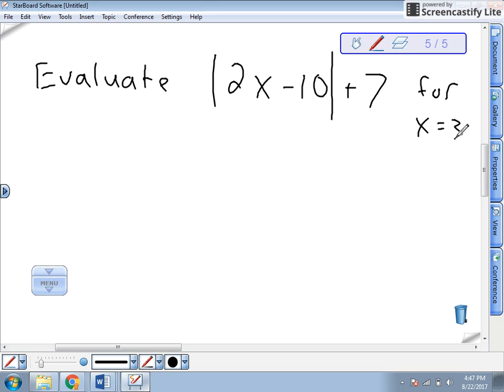So that means where I see an x, I'm going to substitute that in. So here we go. This is going to go right here. So when I rewrite this, I'm going to put my absolute value sign. I'm going to put 2. I'm going to substitute that 3 in for x. Minus 10 plus 7.